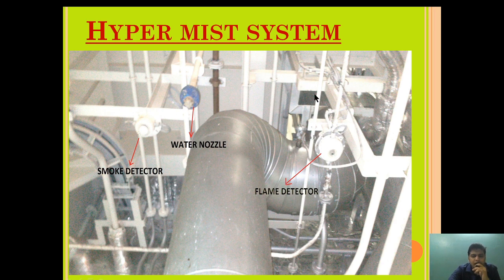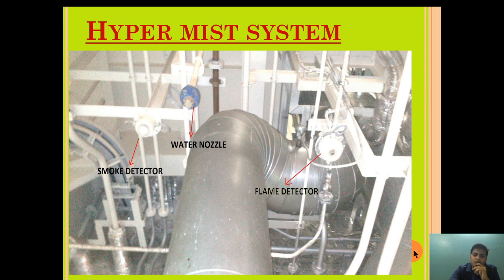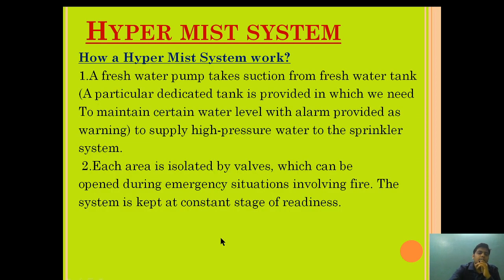In this diagram, above the boiler you can see the flame detector, the Hypermist nozzle, and the smoke detector. Suppose a flame erupts, generating smoke — the smoke detector will activate, and the flame having a certain frequency range will be detected by the flame detector. Once both activate, Hypermist will be injected through the water nozzle and the flame will be extinguished.